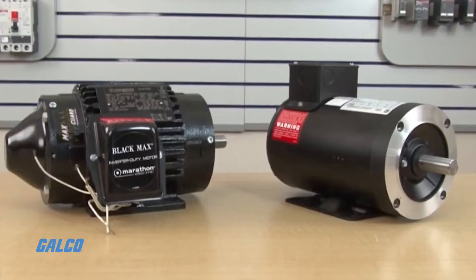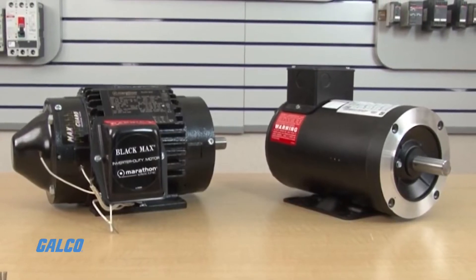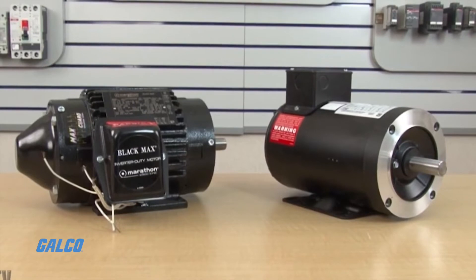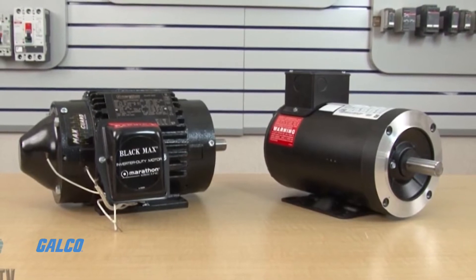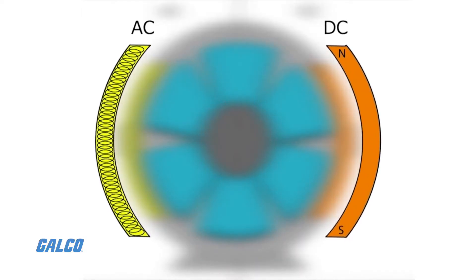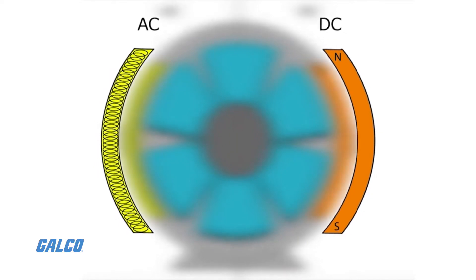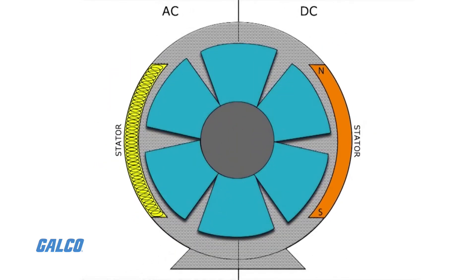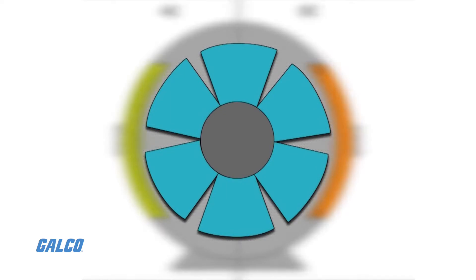AC motors are powered and controlled by AC input voltage. They rely on an outside stator with coils that produce a rotating magnetic field and an inside rotor attached to the output shaft, producing a second rotating magnetic field.